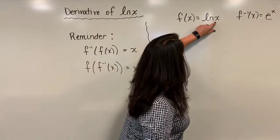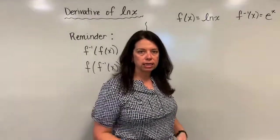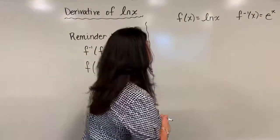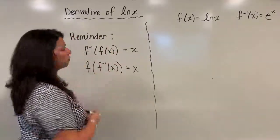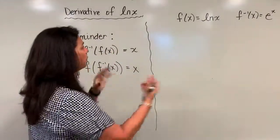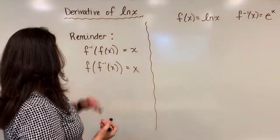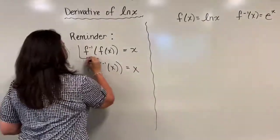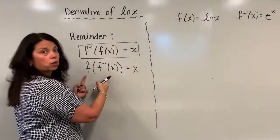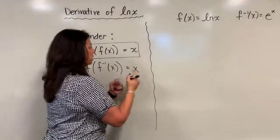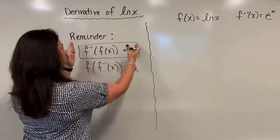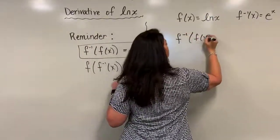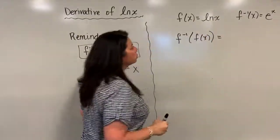So visually, natural log x is the function and e to the x is its inverse. Now I want to use composition to tackle this derivative. I'll compose these two functions using the statement f-inverse of f(x) equals x. It doesn't matter which order I compose — I'll go one direction. So I'm going to find what f-inverse of f(x) is when these are my actual functions, with f-inverse as the outside function and f(x) as the inside function.